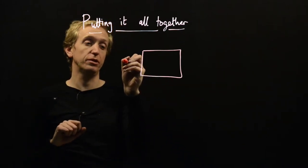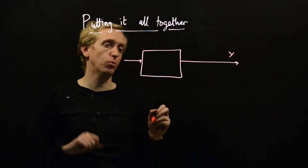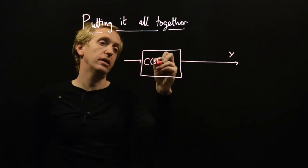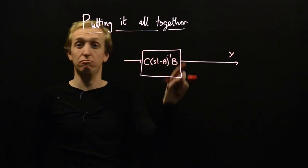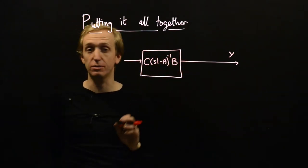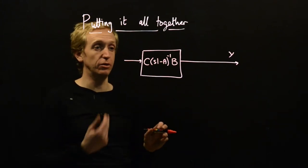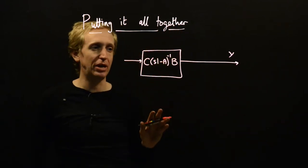The system we want to control has got some inputs and outputs. So that's the output y. The transfer function here is C(sI - A)^-1 B. This is just our usual transfer function for a state space model: X dot equals AX plus BU, Y equals CX.